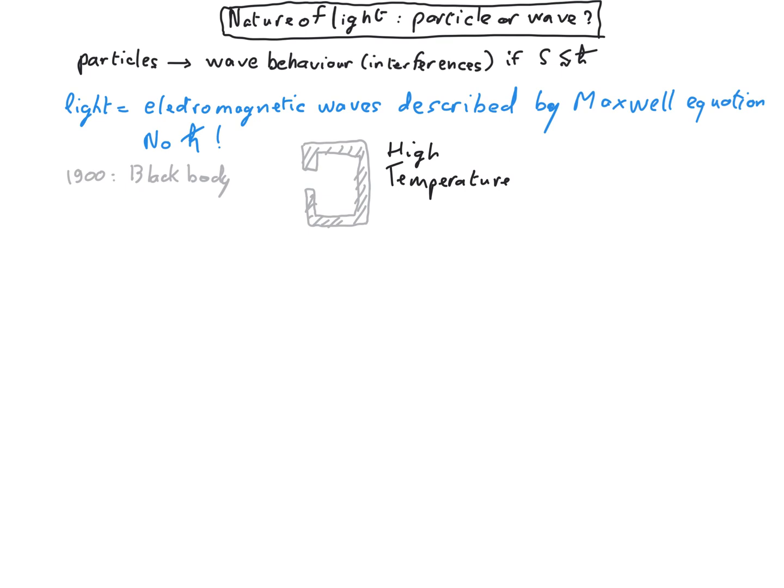It's called a black body but it's misleading because if you open a small hole in this cavity and you look inside, you will see it's not black. It's more likely to be red because of the heat. It's like an oven if you want.